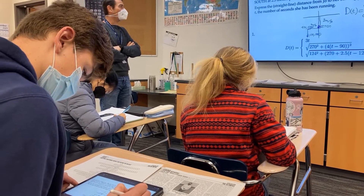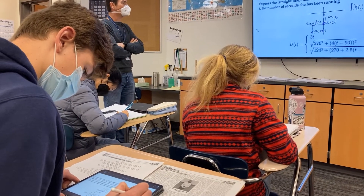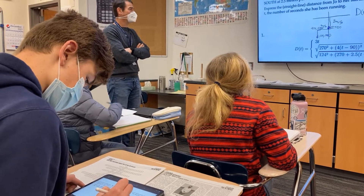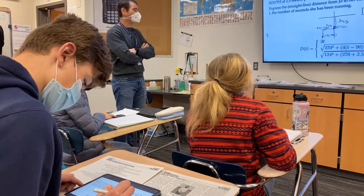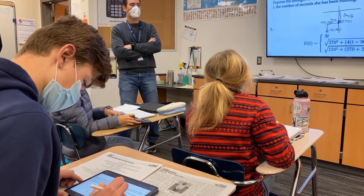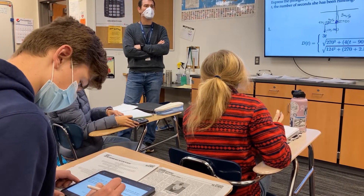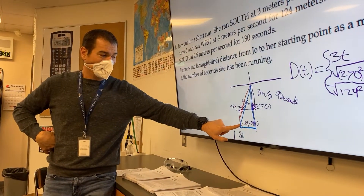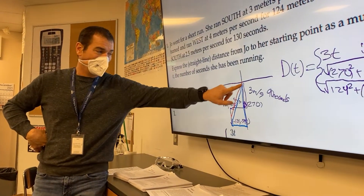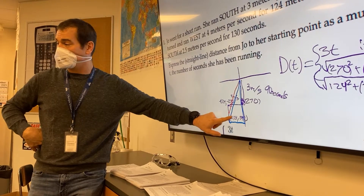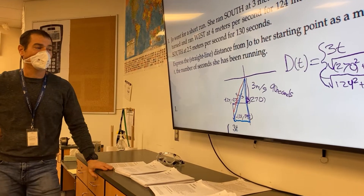If you then turn it around west at 4 meters per second for 124 meters, so we have that distance. So we want to find the distance from here to here. Jack's drawn this triangle. We can use the Pythagorean theorem, but there's another triangle that we could use.